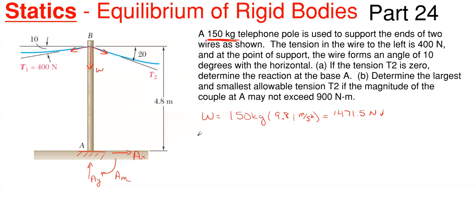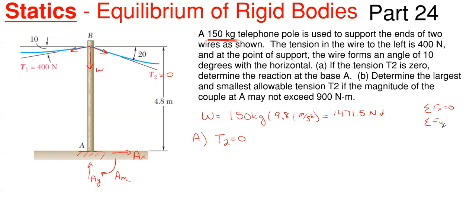Starting on Part A: T2 equals zero, so we completely ignore the second wire. We have three unknowns — horizontal, vertical, and moment — so we can use each equilibrium equation once to find a single reaction.